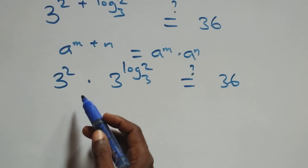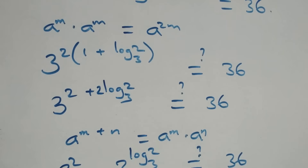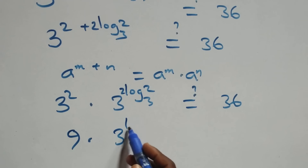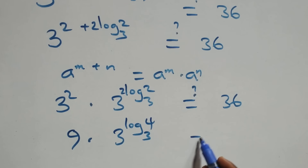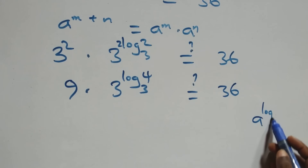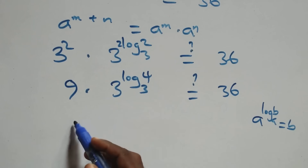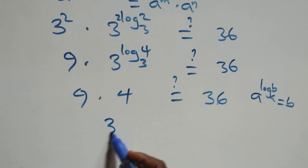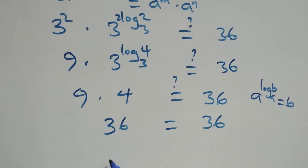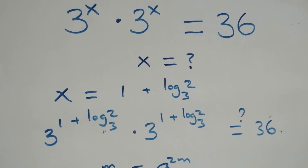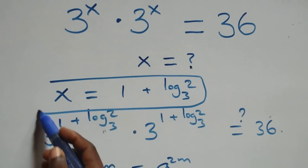We apply the product rule for exponents: 3 squared times 3 raised to power 2·log₃2 equals 36. Bringing the 2 up, we have 9 times 3 raised to power log₃(2²), that is log₃4, equals 36. Using the identity a raised to power log_a(b) equals b, we have 9 times 4, which equals 36. Left hand side equals right hand side, and therefore x equals to 1 plus log₃2 satisfies the given problem.